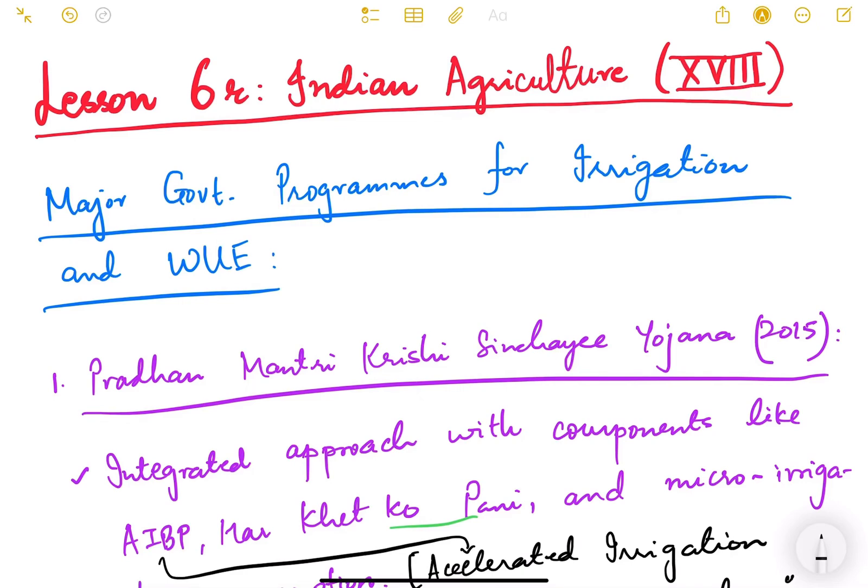Hello friends and welcome to lesson number 6. We are studying Indian agriculture in this lesson and this is the 18th video of this particular topic. In this video we are going to study about the major government programs for irrigation and water use efficiency in our country.